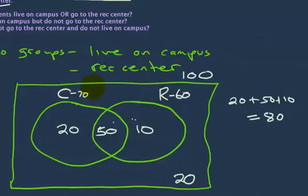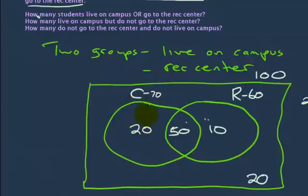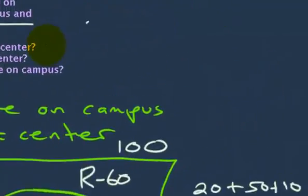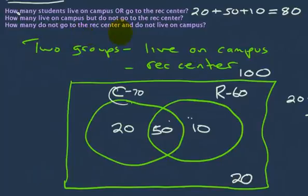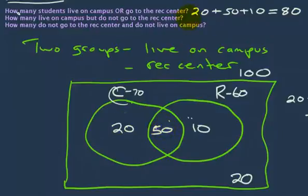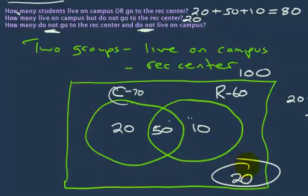Now I can answer the questions. How many live on campus or go to the rec center? They can live on campus, go to the rec center, or both — that's the 20 only on campus, the 50 who do both, and the 10 only going to the rec center, which adds up to 80. How many live on campus but do not go to the rec center? They're in the campus circle but not the rec center circle, so the answer is 20. How many do not go to the rec center and do not live on campus? That's the people outside both circles — also 20.